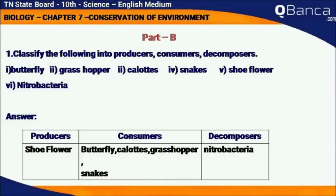Classify the following into Producer, Consumers, Decomposers: Butterfly, Grasshopper, Carrots, Snake, Shoe Flour, and Nitrobacteria.